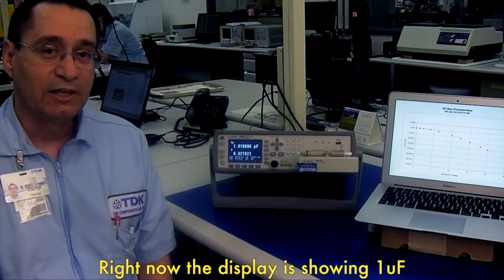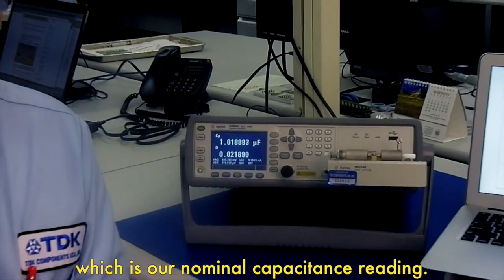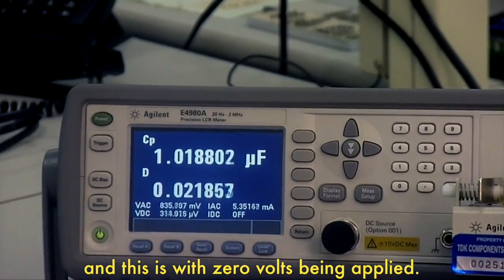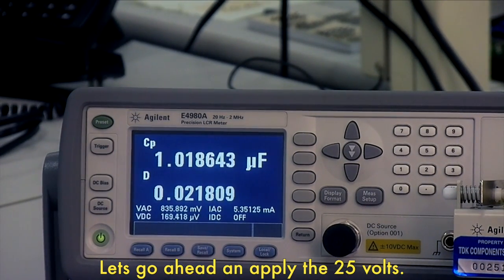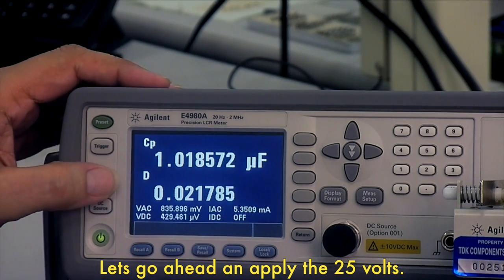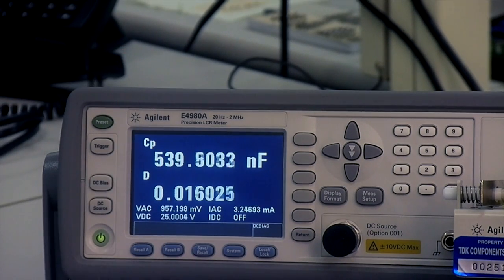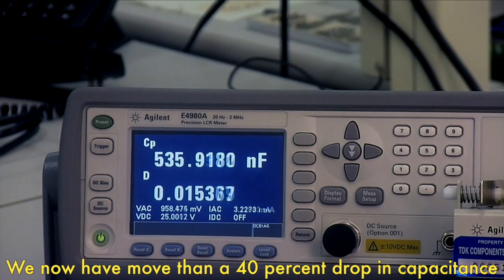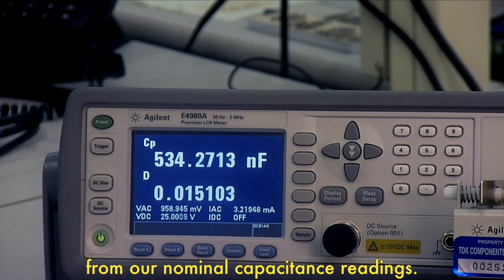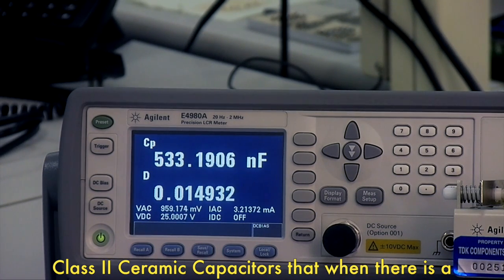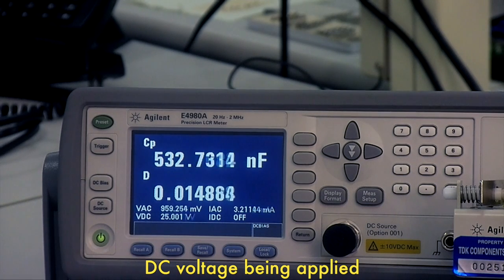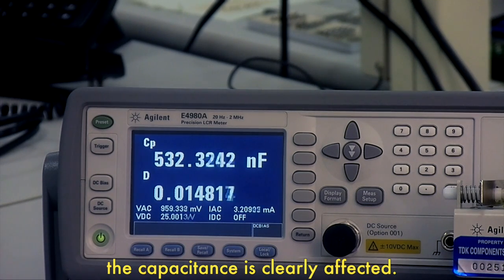Right now the display is showing one microfarad, which is our nominal capacitance reading, and this is with zero volts being applied. Let's go ahead and apply the 25 volts. We now have more than a 40 percent drop in capacitance from our nominal capacitance reading. This clearly tells us that class 2 ceramic capacitors, when there is a DC voltage being applied, the capacitance is clearly affected.